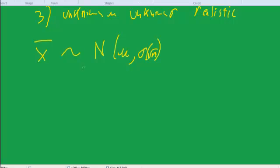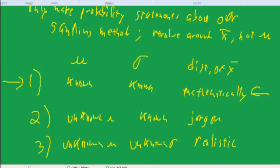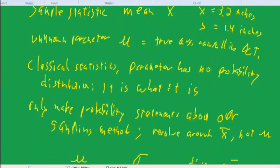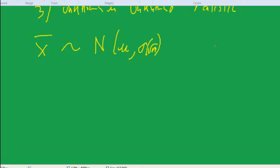In our example of the rainfall, I said X-bar was 3.2 and S is 1.4. Let's say that the true μ, let's pretend that we know the true μ of rainfall. Pretend that we know it's 3.5, and pretend that we know that the true σ is 1.5.